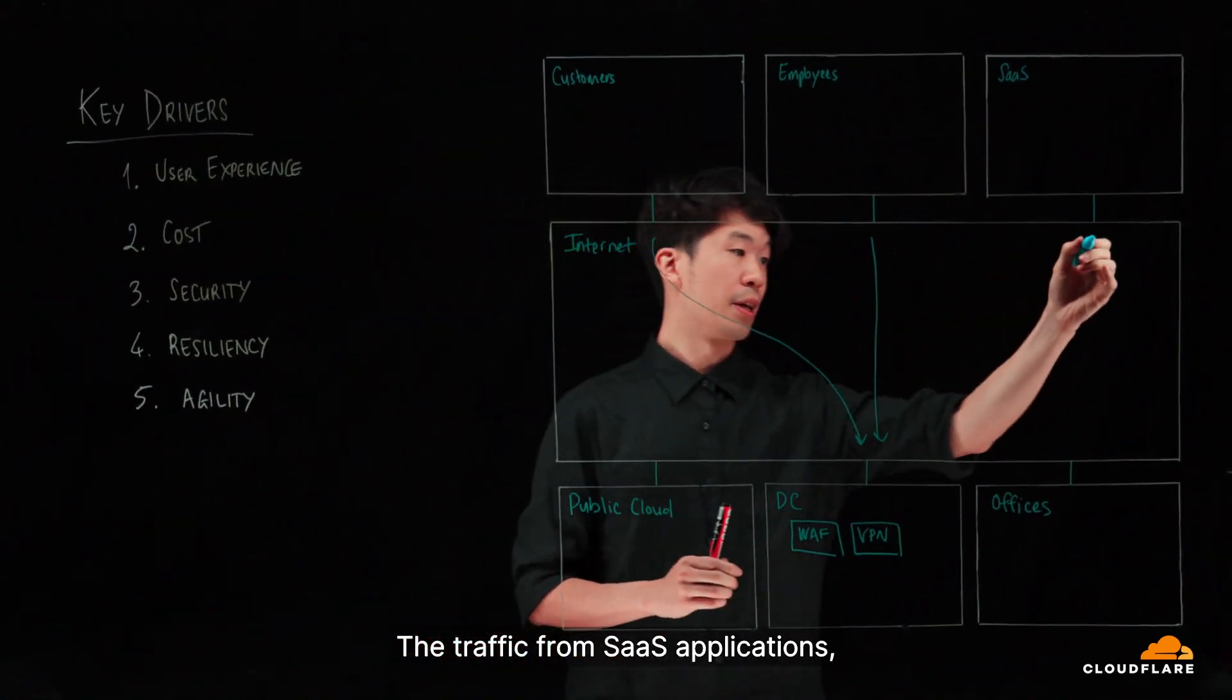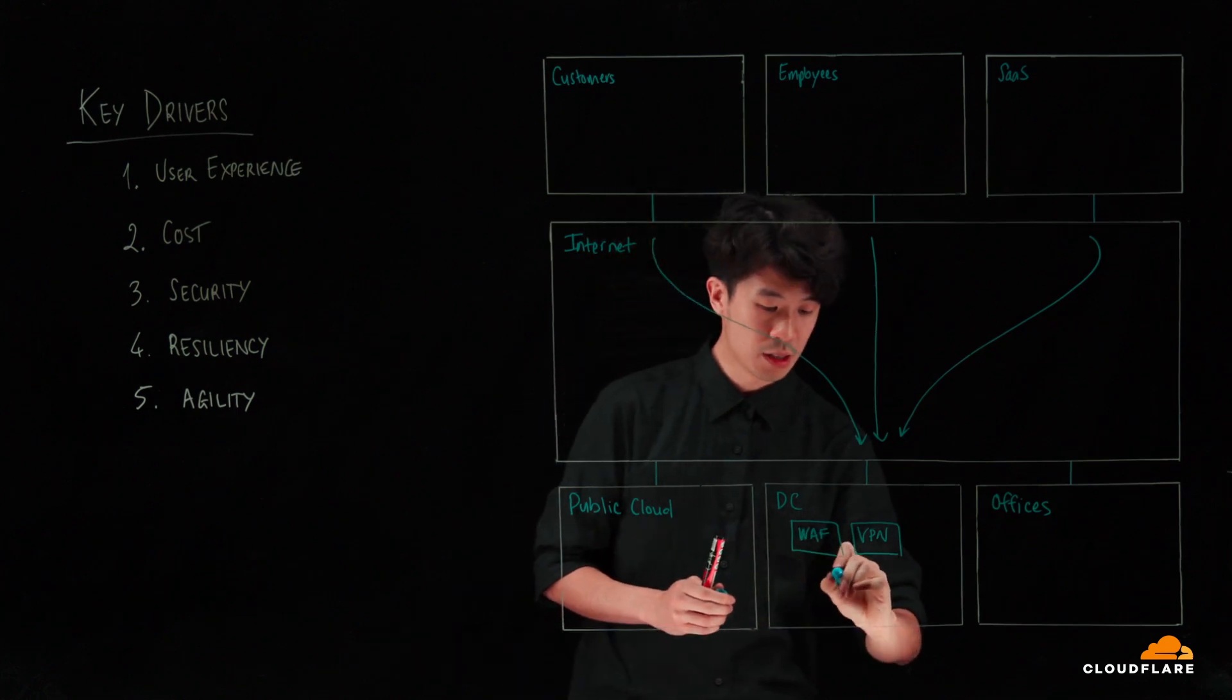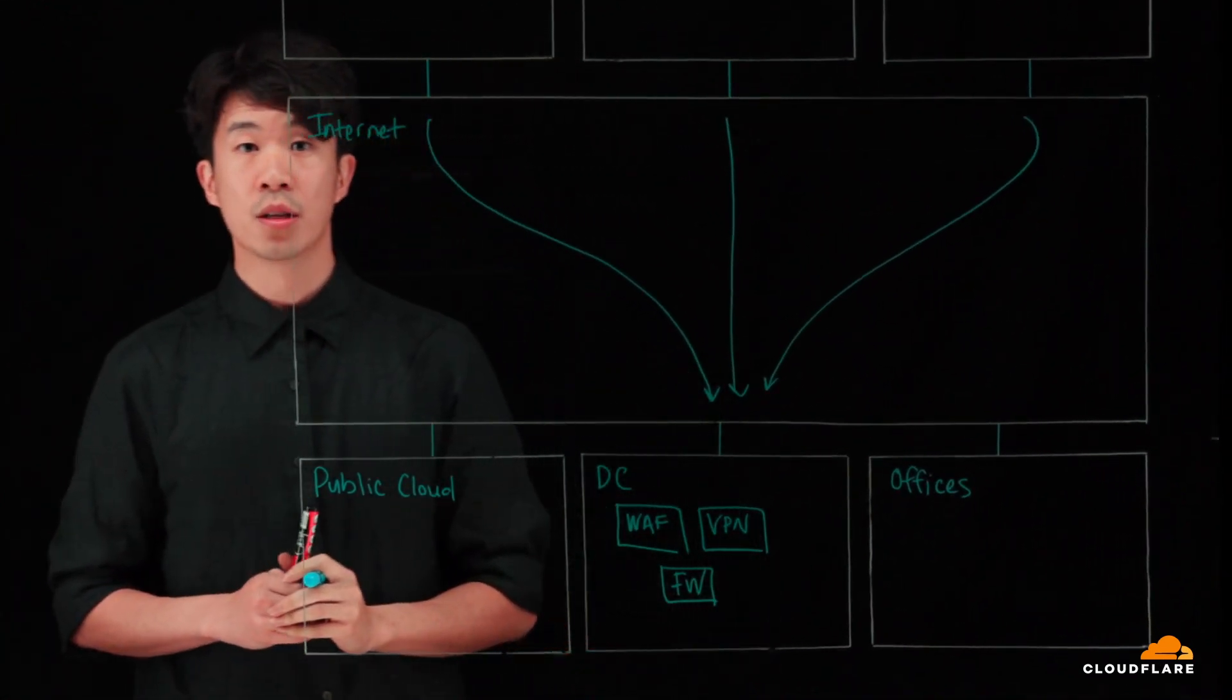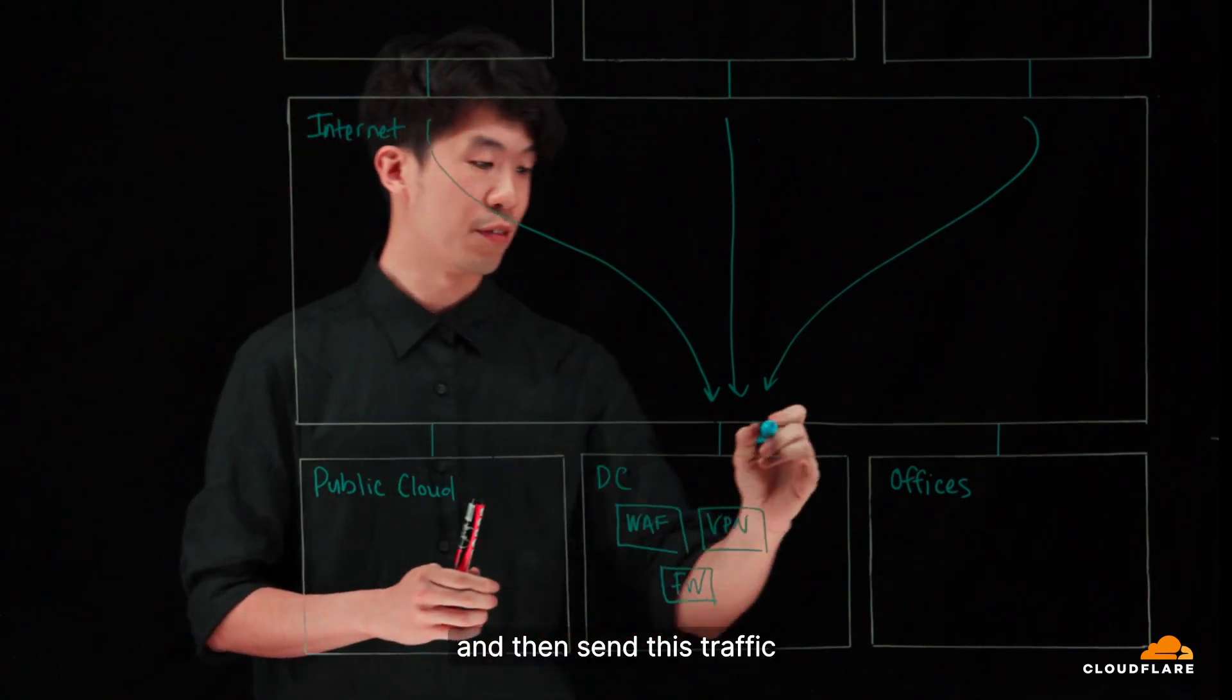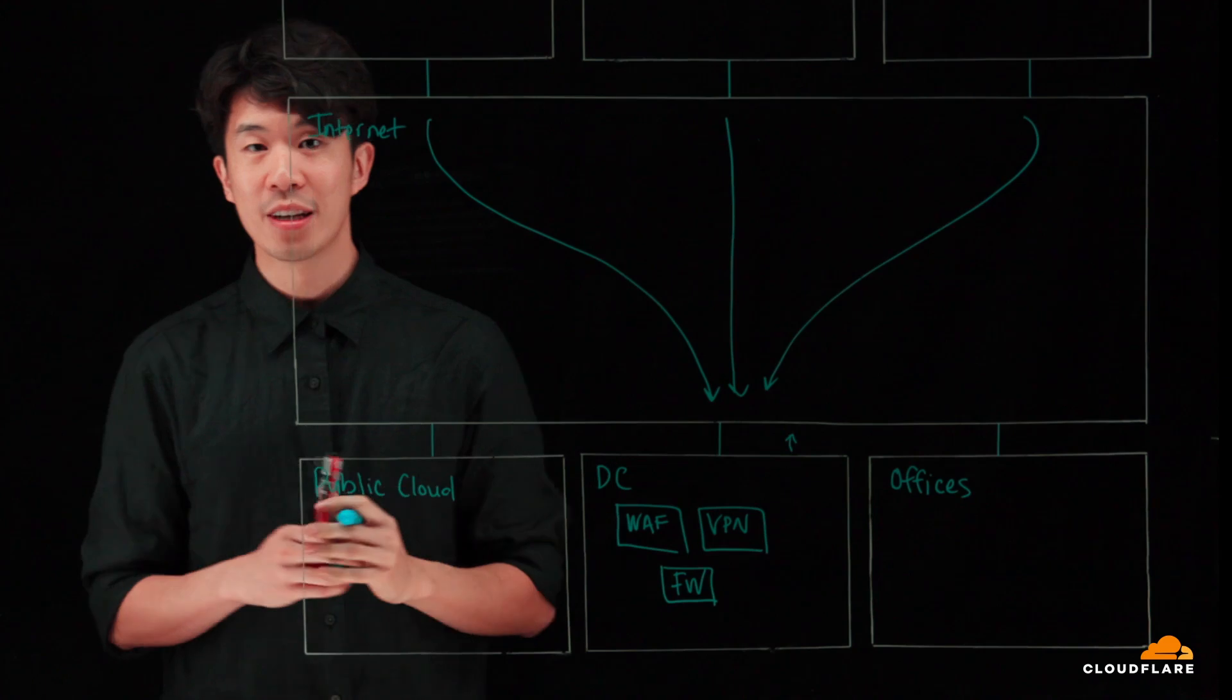The traffic from SaaS applications, as well as from offices or public clouds, leverage a next generation firewall to inspect that. Do all this inspection in one place and then send this traffic back out into the internet. Problem solved, right? Not quite.